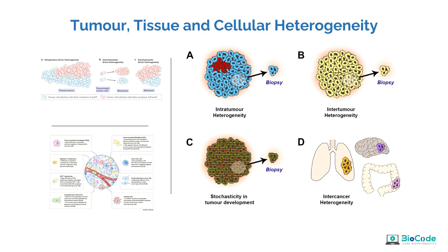This is known as tumor heterogeneity in the case of cancer, tissue heterogeneity in a normal context, and cellular heterogeneity when talking about a normal tissue that has multiple cells performing multiple different functions. Looking at these figures, we can see that in a particular primary breast cancer tumor there are two different types of cells: one tumor subclone that has mutation A and mutation B, and another population that has mutations A, B, and C. So even though they are part of the same tissue, they differ in terms of their genome and expression.